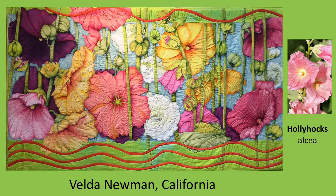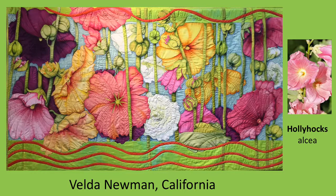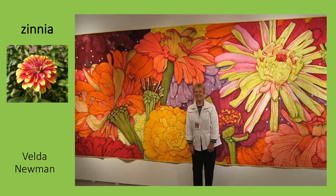This is Velda Newman's interpretation of hollyhocks — she has beautifully captured a profusion of very flamboyant blooms. Newman is known for creating close-up views of plants in very large quilts. In the photo, Newman is standing in front of her zinnia quilt, which it took her two years to complete. This quilt, which is more than 17 and a half feet wide and over seven feet tall, is based on Newman's study of a wide variety of zinnias that she grew in her backyard. She photographed the zinnias when they started blooming and continued until they were done. Each flower in the quilt was composed of many petals cut out of fabric, assembled into the flower shape, and then stitched together. The lavender dots scattered across the surface represent grains of floating pollen.